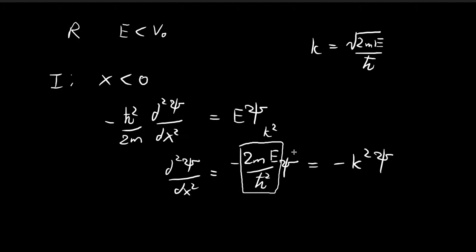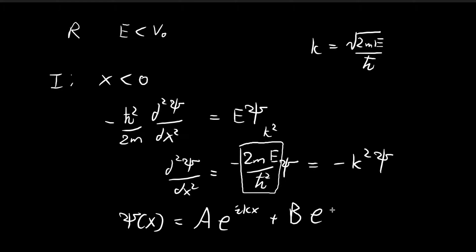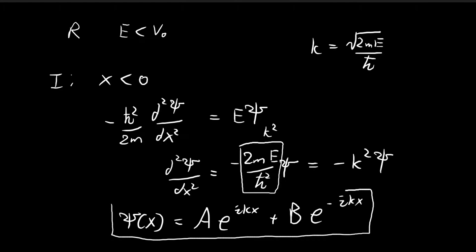For this differential equation the general solution is ψ(x) = A·e^(ikx) + B·e^(−ikx). This is ψ(x) for region 1, where x is smaller than 0.